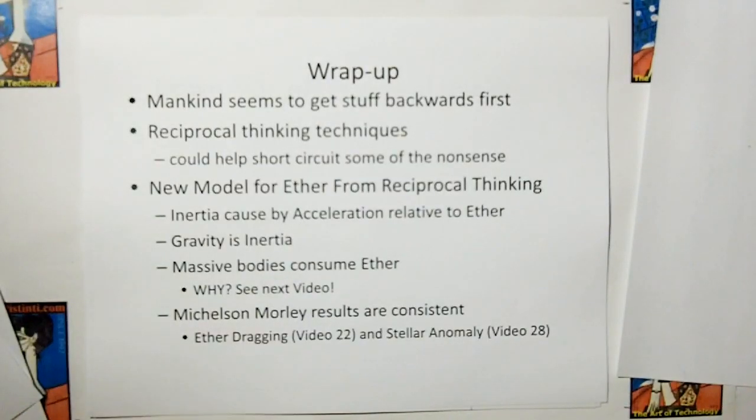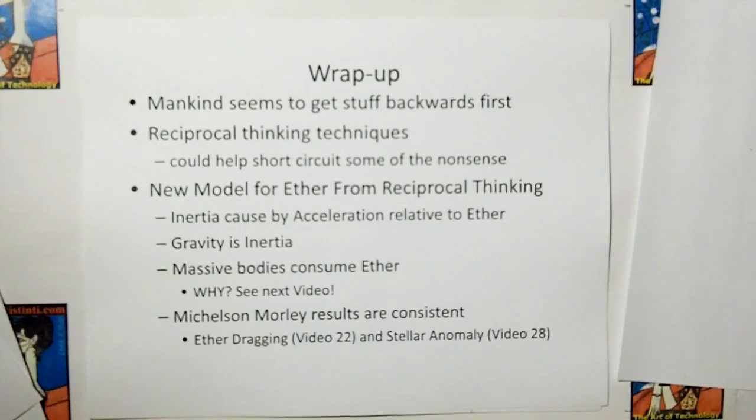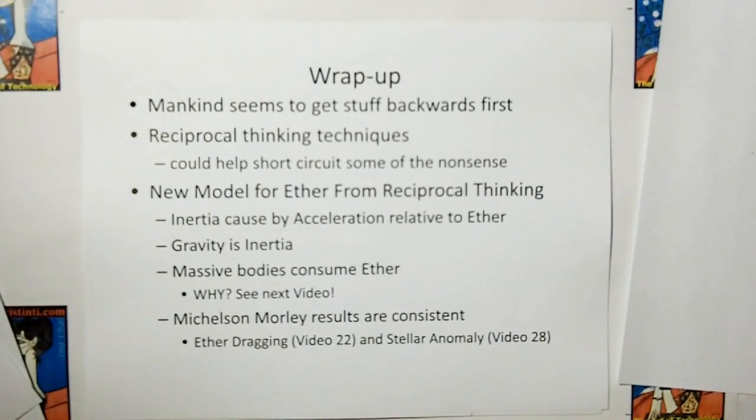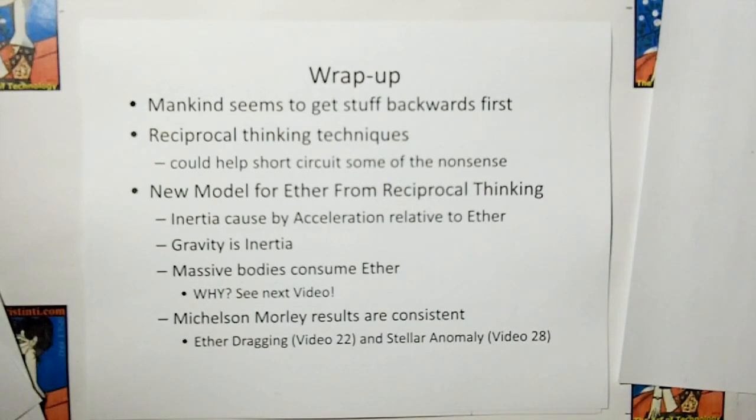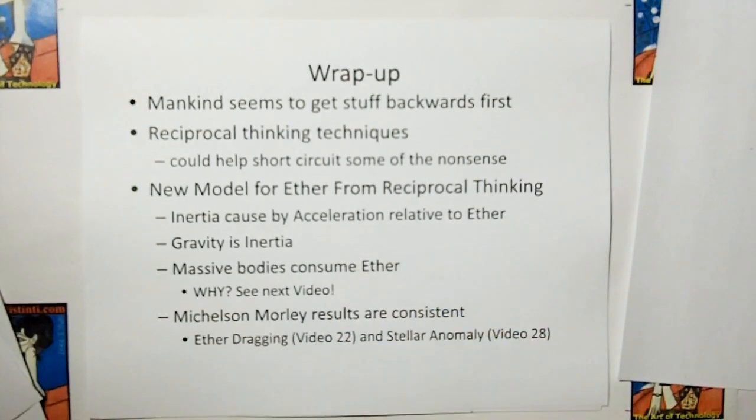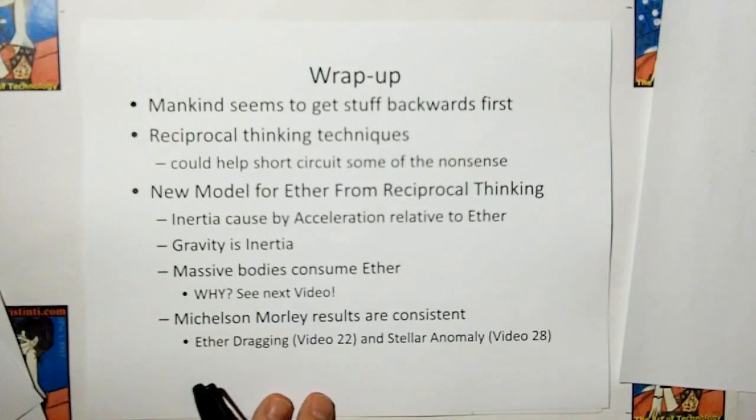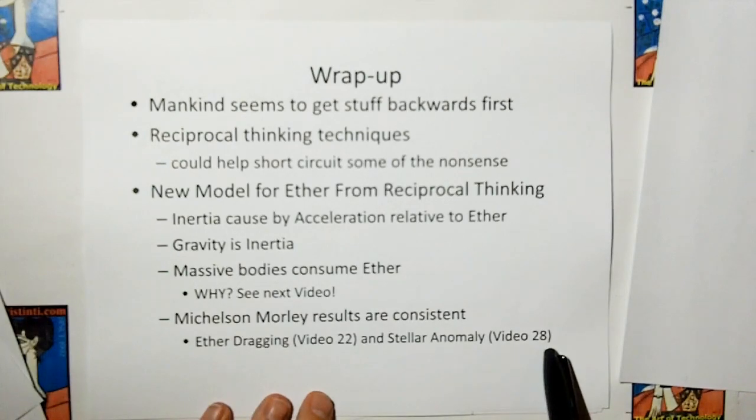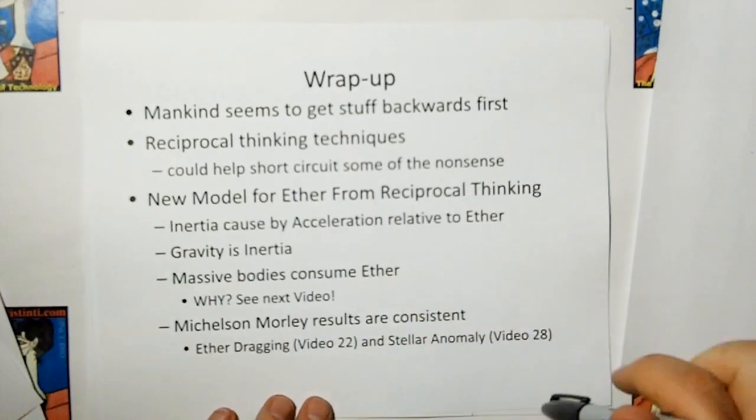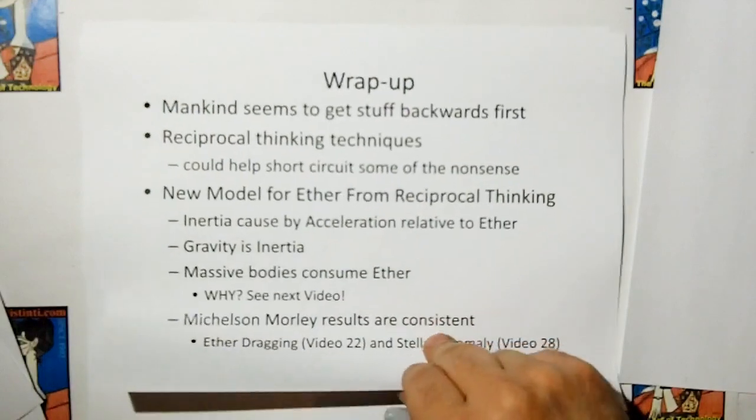Interesting. So mankind seems to get stuff backwards first. Reciprocal thinking technique could help short circuit some of the nonsense. From the reciprocal thinking, we developed a new ether model. We find that inertia is caused by the acceleration of an object relative to the ether. We also find that gravity is inertia because massive bodies consume the ether. Why do massive bodies consume the ether? You've got to see the next video. The Michelson-Morley experiment is consistent with the new ether model, and so will ether dragging and the stellar anomaly. Video 22 and 28. Now, these video numbers might change depending on how the production comes out.